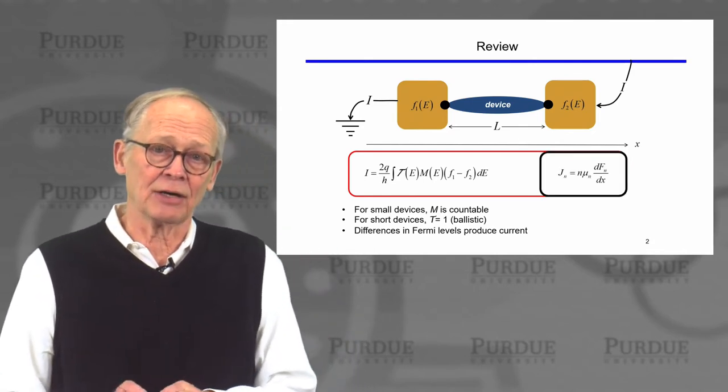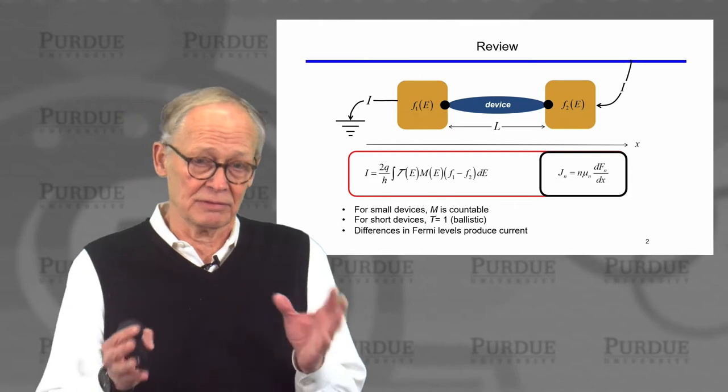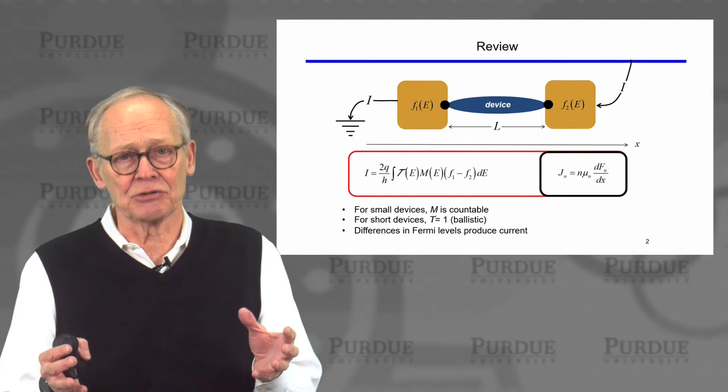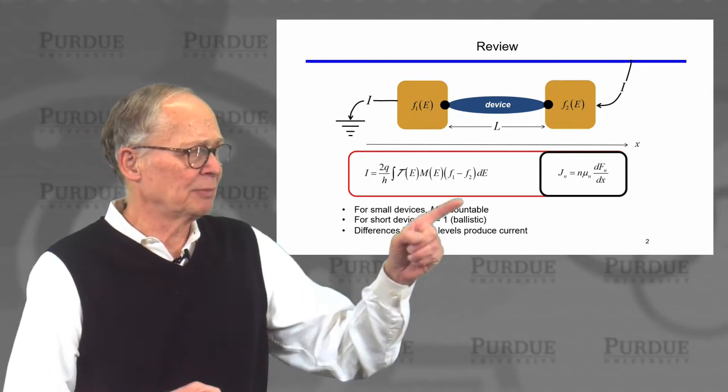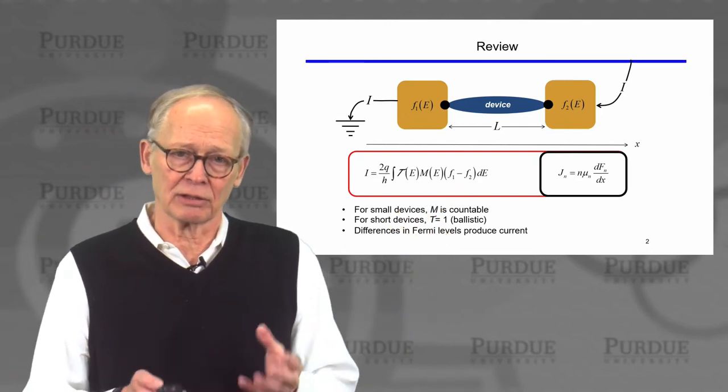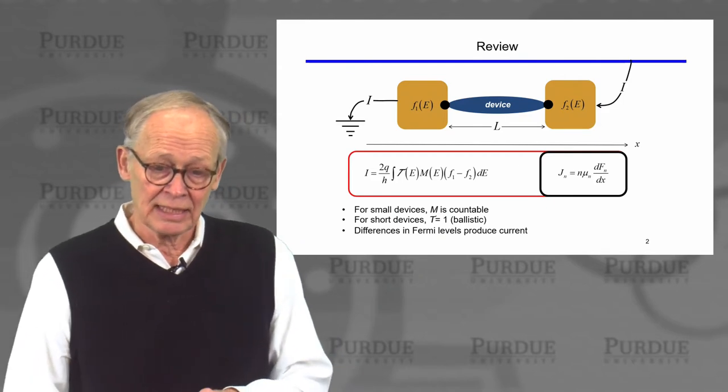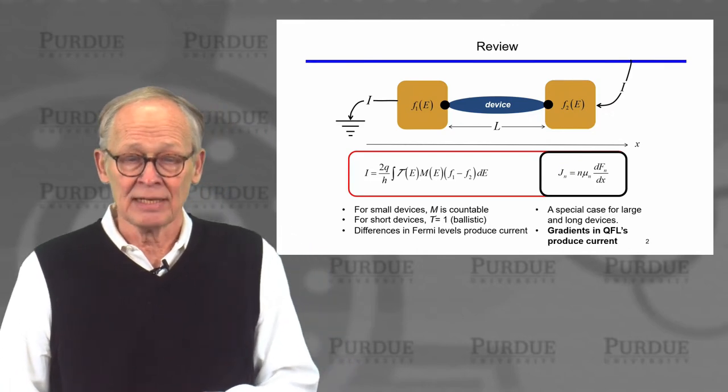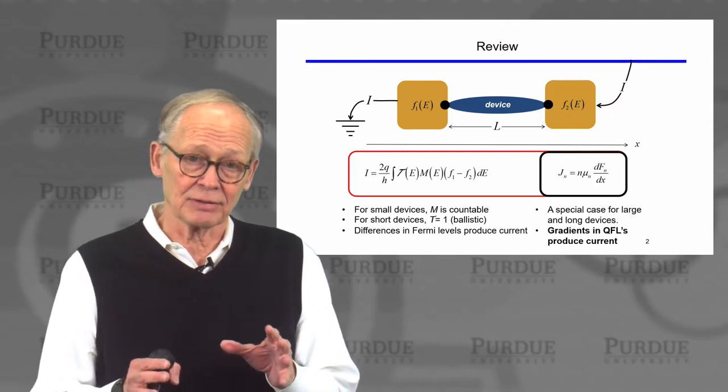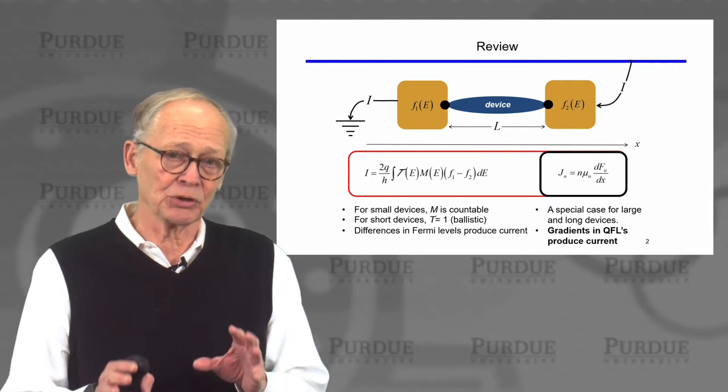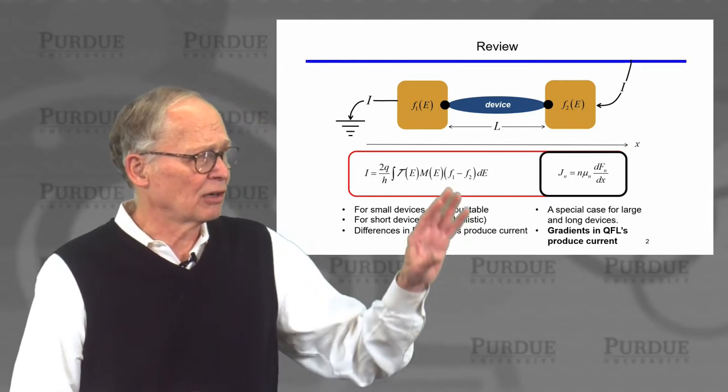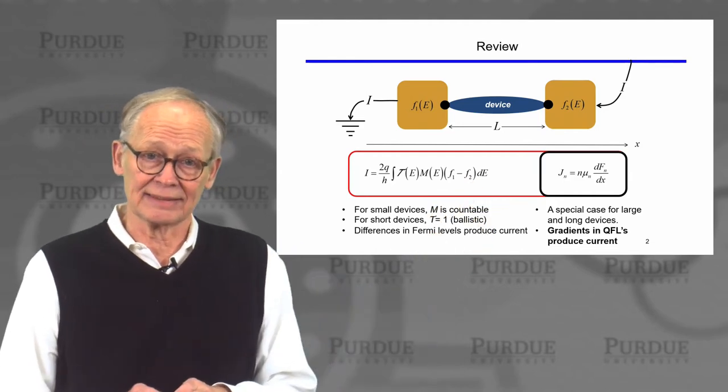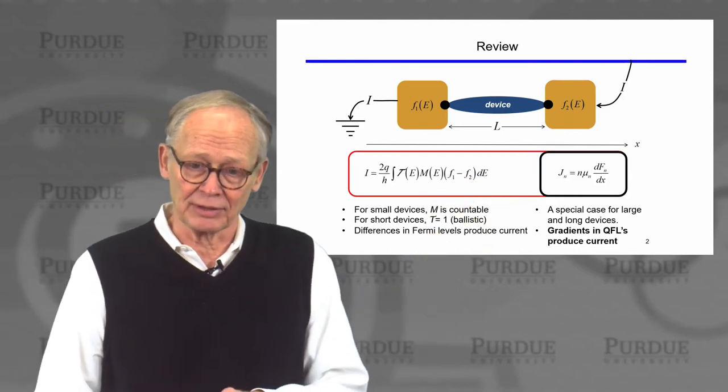We also showed how you can take this same approach and make the device very long, the contacts drop out of the picture. We came up with this very general expression for current in a large bulk semiconductor. And what we found is that the current is proportional to the gradient of the quasi Fermi level, something that is analogous to the Fermi level in equilibrium. So that's a very important point to take away. We are largely going to be concerned with the expression for the large bulk devices and thinking about gradients of quasi Fermi levels.